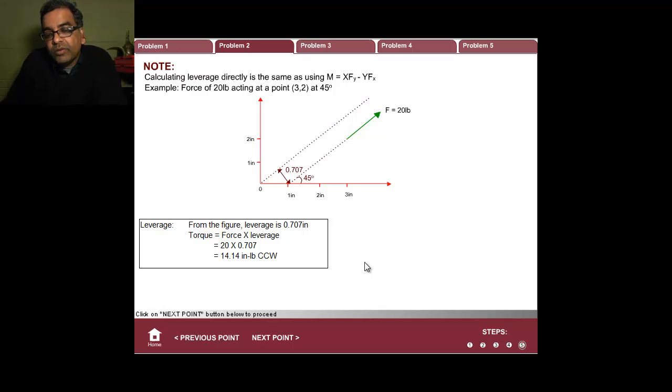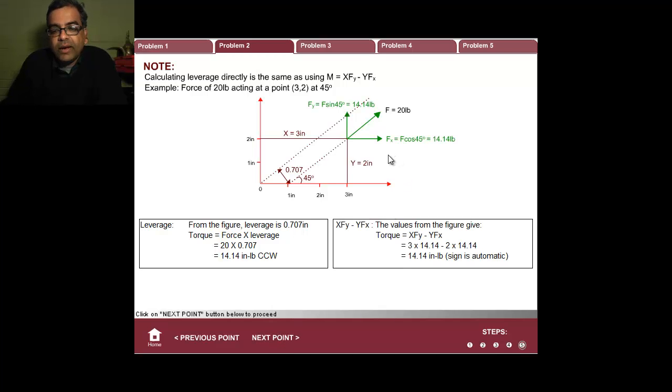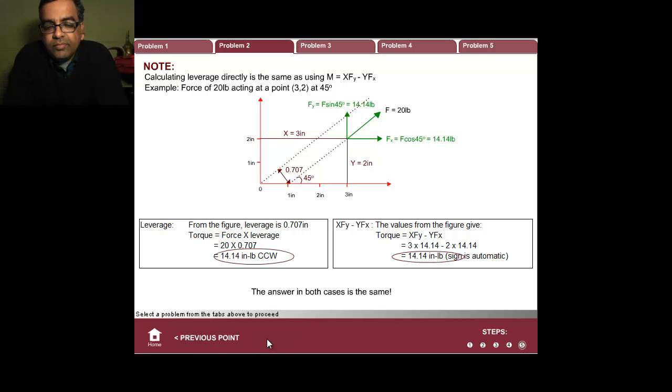Now let's do it by using our Cartesian notation. First, I take force and I write it as fx is f cos 45, fy is f sin 45, x is 3, y is 2. Let's do that. xfy minus yfx, you'll get exactly the same answer. You see that? Exactly the same. Please stare at these two things. Make sure you convince yourself that doing either of them is identical. Thank you very much.